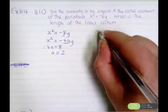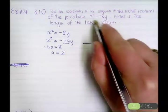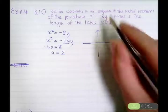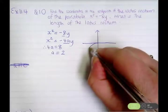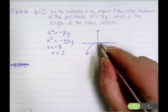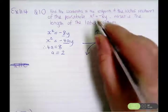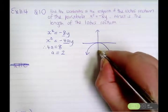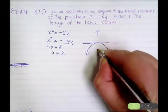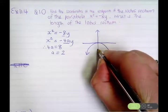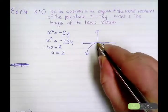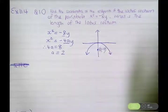Now we need to sketch this parabola. Because it's the x squared equals negative 8y type, it means that it's concave down with vertex (0,0). We know the focal length is 2, so the distance from the vertex to the focus is 2 units, therefore the coordinates of the focus will be (0, negative 2).